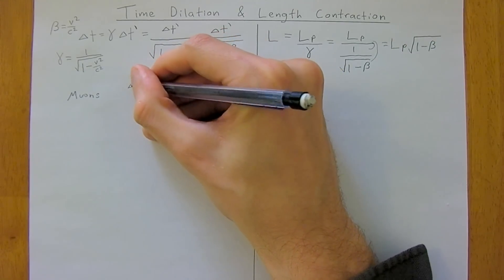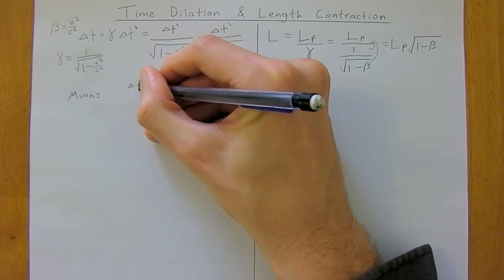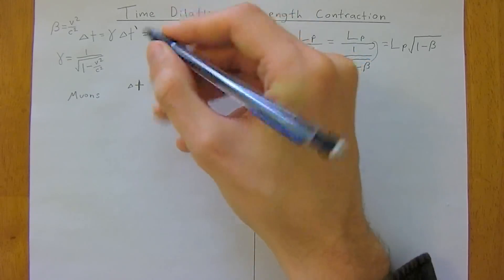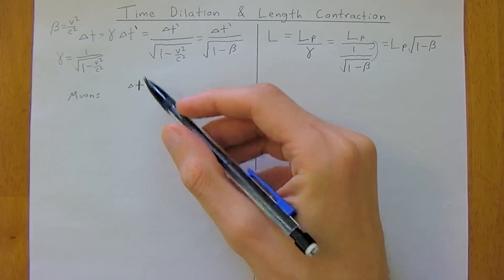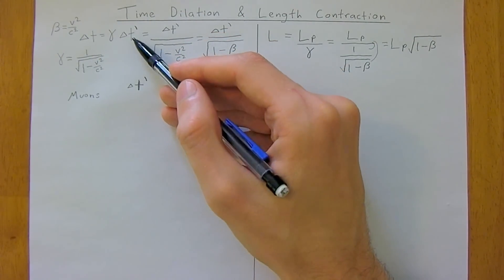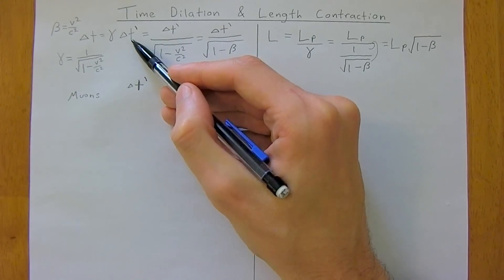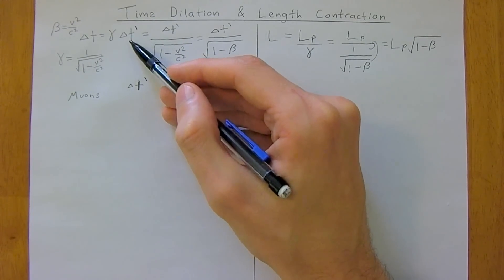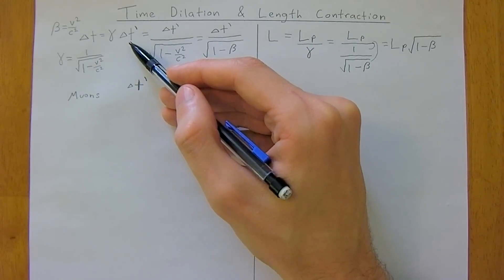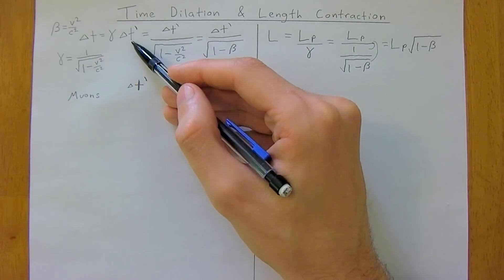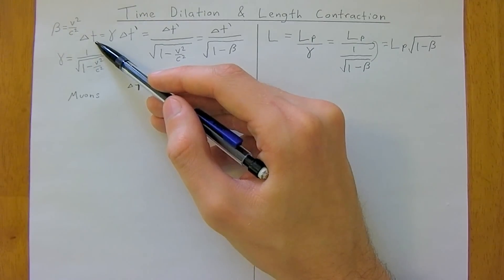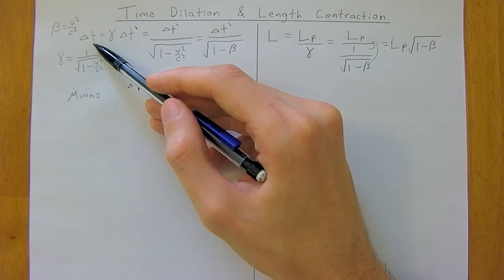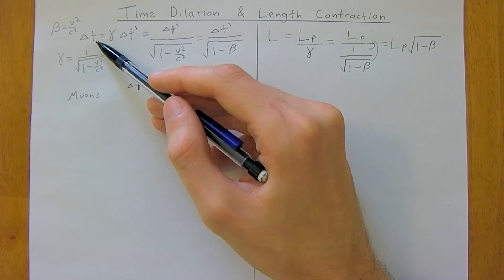which have a lifetime we'll call delta t naught. The way you distinguish is delta t naught or delta t prime is from the reference frame of the object that is moving with that velocity. And the other delta t, just regular delta t, is observed from Earth or some external reference frame.